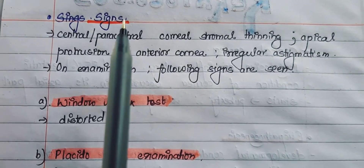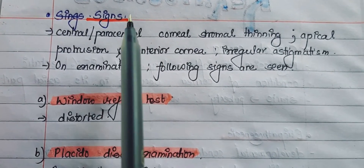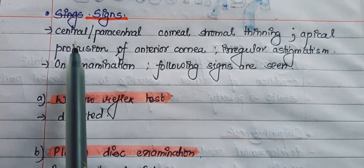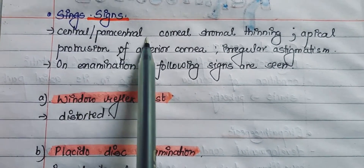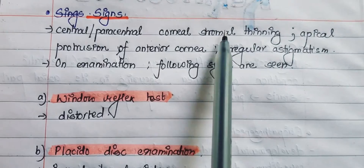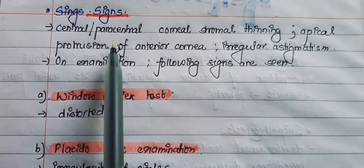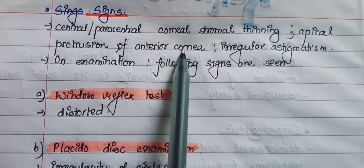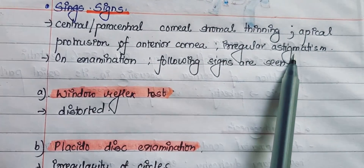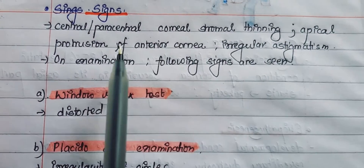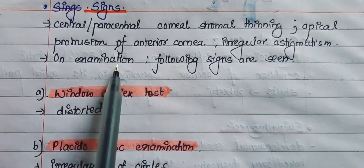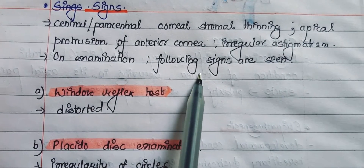The hallmark of keratoconus is central or paracentral corneal stromal thinning, apical protrusion of the anterior cornea, and irregular astigmatism. On examination, the following signs are seen.